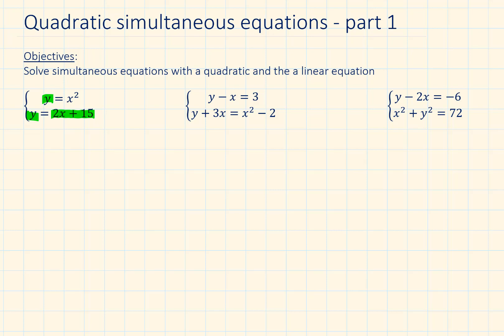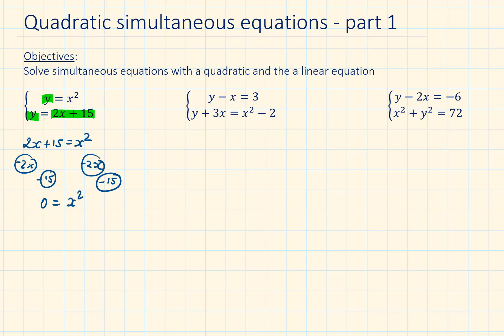If we do that, we are going to have 2x plus 15 is equal to x squared. Next, we are going to make sure that everything is only on one side of the equation. I prefer to keep the x squared as positive, so I am going to subtract 2x from both sides and subtract 15 from both sides. This will give us x squared minus 2x minus 15.